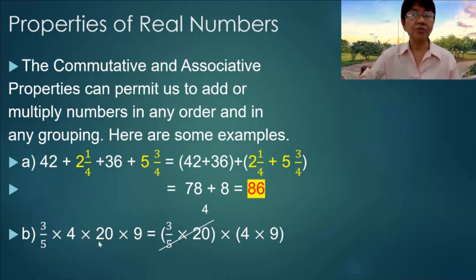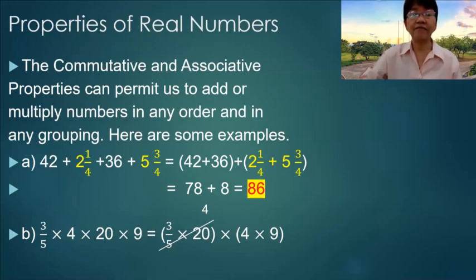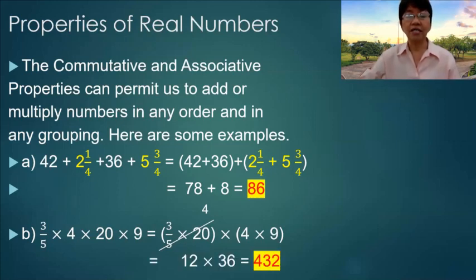For letter b: 3/5 times 4 times 20 times 9. We group together the fraction and the number that can cancel with the denominator 5. We cancel 20 and 5 to get 4, then multiply the rest, and the answer is 12 times 36 is equal to 432.